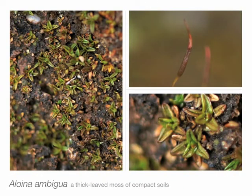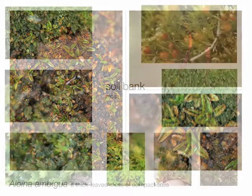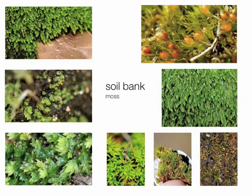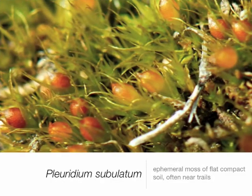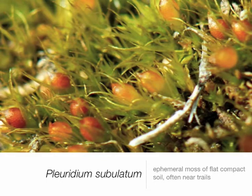This is Aloina ambigua, another member of the family Pottiaceae. It has a thick appearance to the leaves and no awns. The next species is an ephemeral moss — Pleuridium subulatum. It grows on flat soil or soil banks and has a recessed bright orange sporophyte, which is very characteristic of an ephemeral moss.